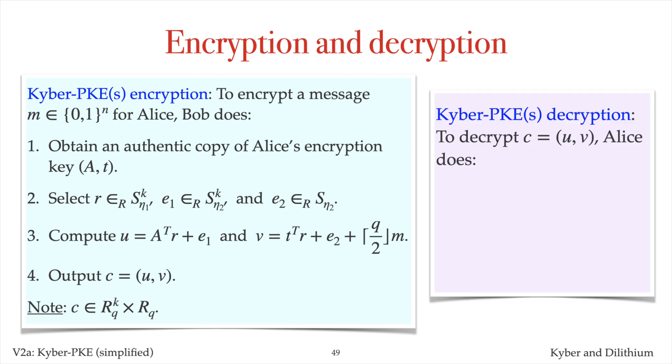To decrypt the ciphertext C, Alice uses her decryption key S to compute the polynomial V minus S transpose U, and then rounds its coefficients to obtain the plaintext M.